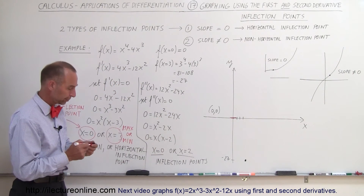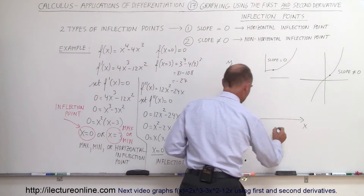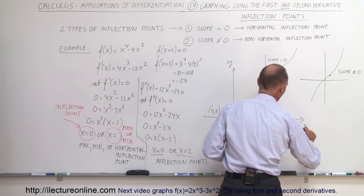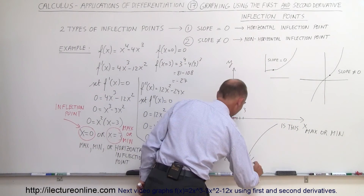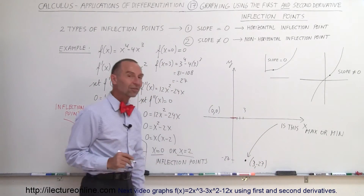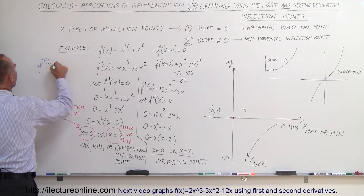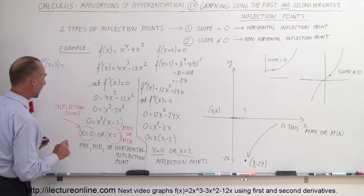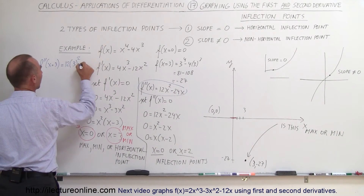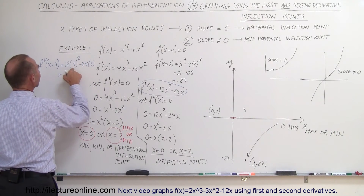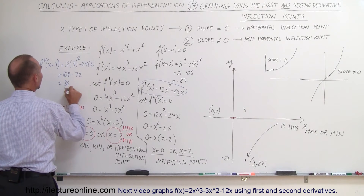So how do we know if x = 3 is a max or a min? There's another use of the second derivative. Take x = 3 — the point (3, -27) — and plug it back into the second derivative. f''(3) = 12·(3²) - 24·3 = 108 - 72 = 36. The big thing here is that it's positive.